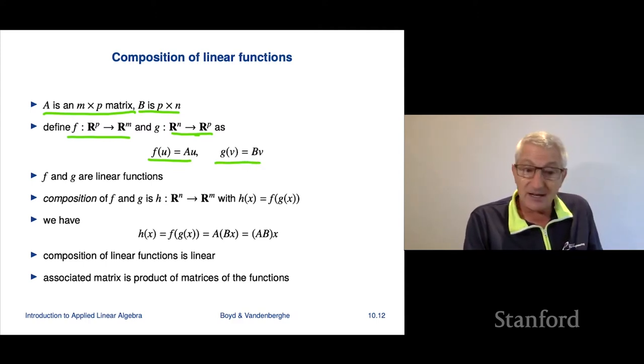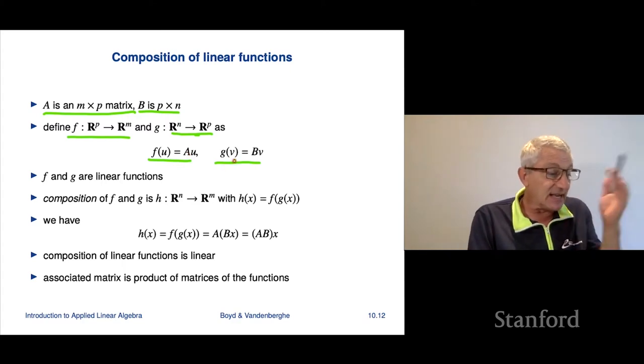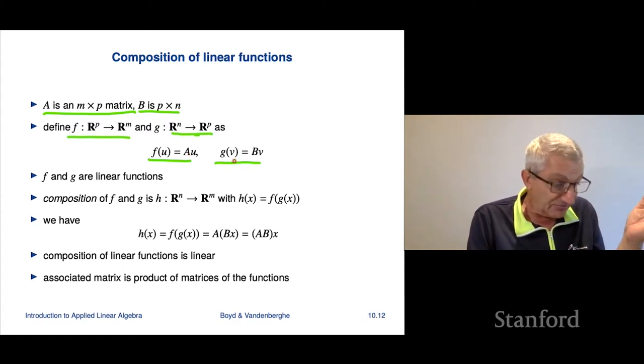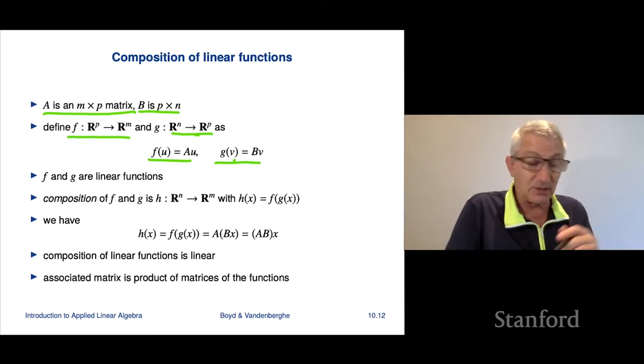So f takes an argument u, which is a p-vector and what it gives as a result is Au, the matrix A. G takes in a vector v, which is an n-vector and what it gives back is B times v, the matrix vector product. These are linear functions, right, because they're given by matrix vector multiplication.